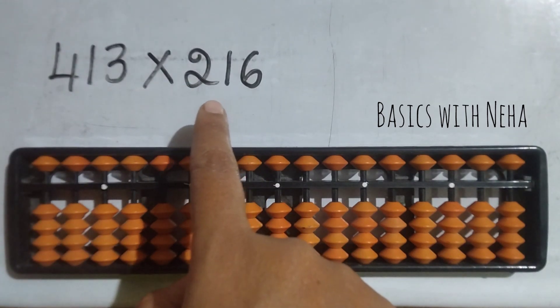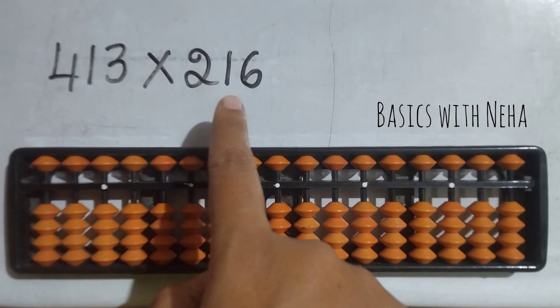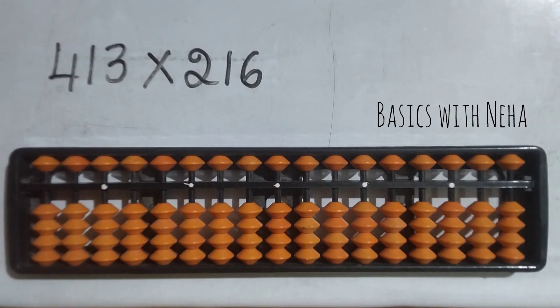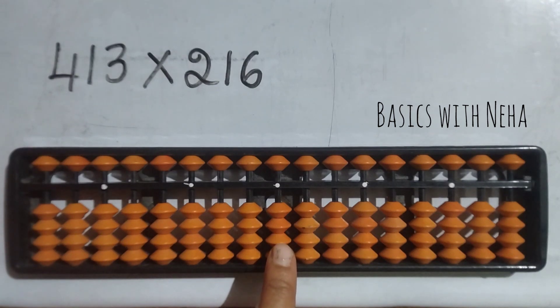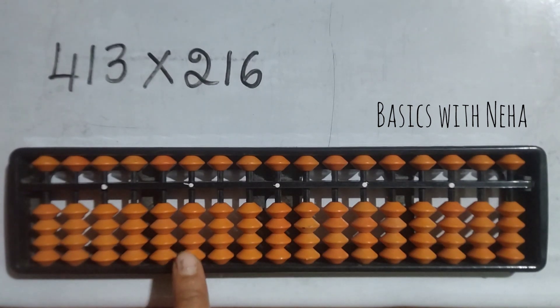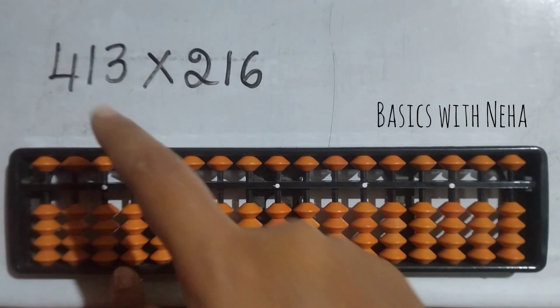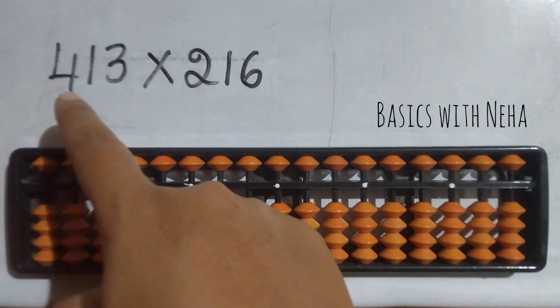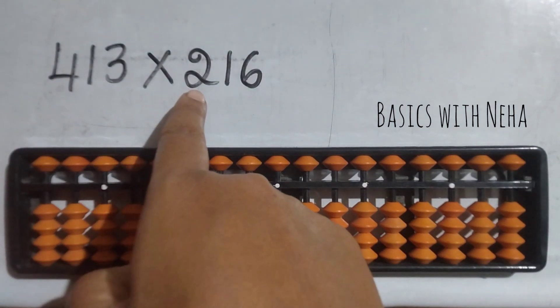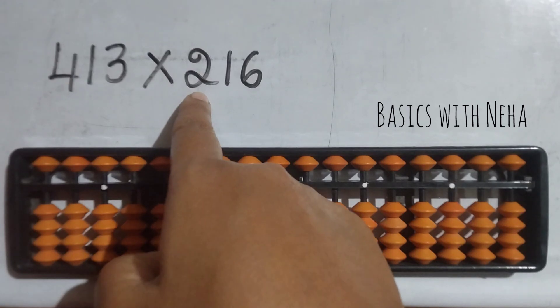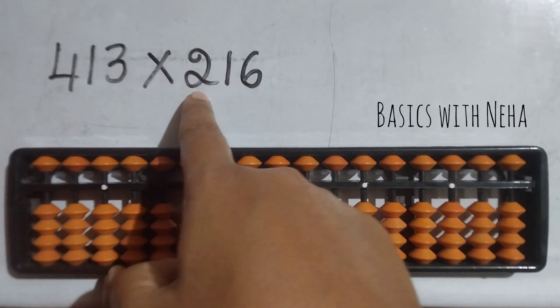There are six numbers in total, so take the sixth rod from the house pointer ones rod. Starting from the left side: 4 twos are 8. Any single digit number should be followed by zero, so it will be zero and then eight.